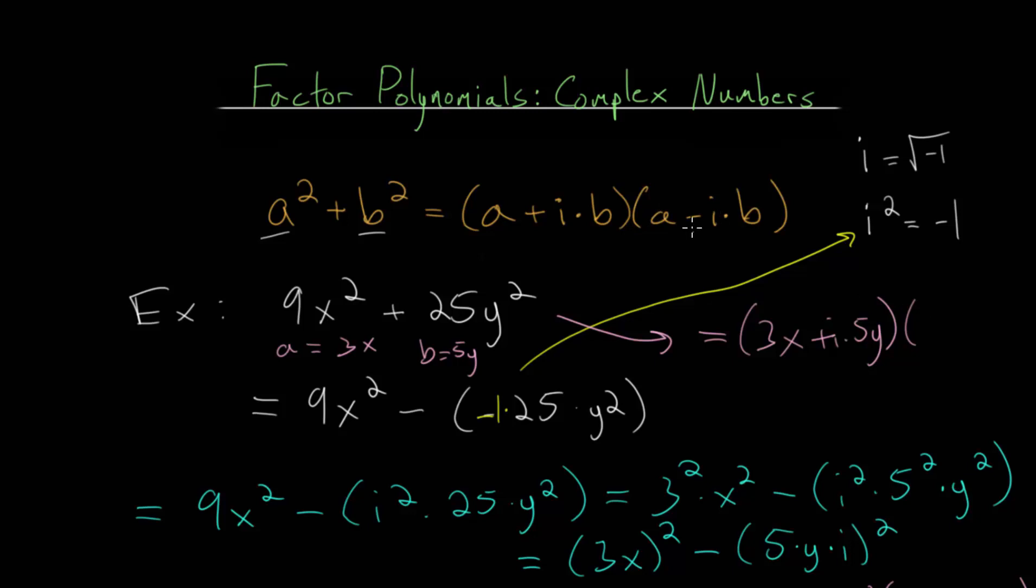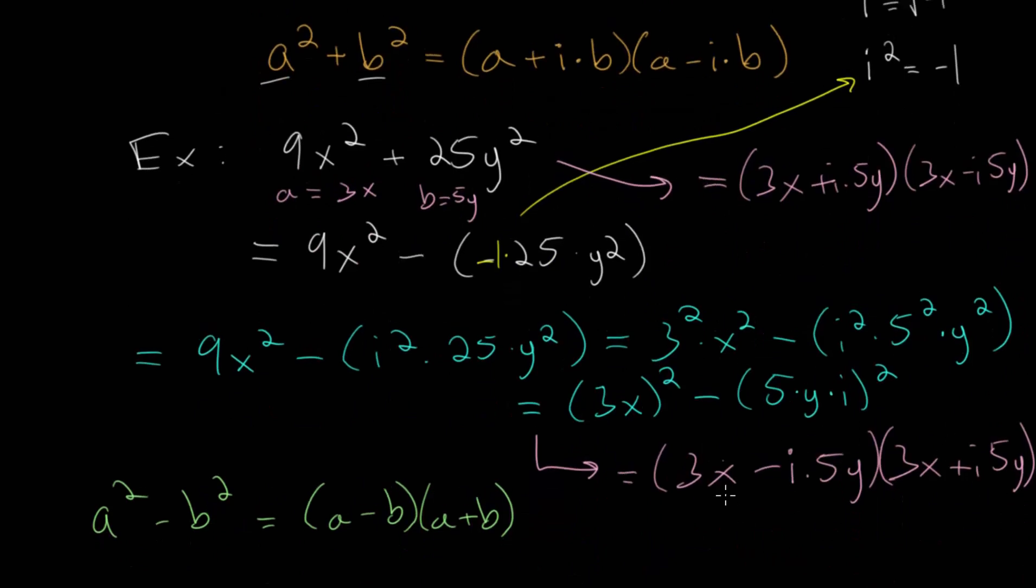And now just plugging everything into the formula, we would get 3x plus i times 5y. And we would get 3x minus i times 5y. But that is exactly what we got down here, just with the order switched, but that doesn't really matter.